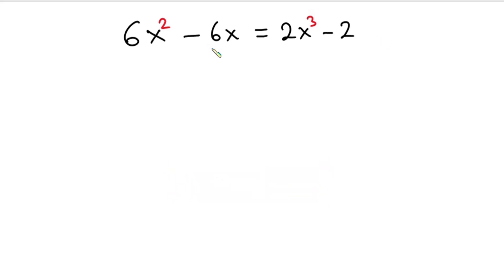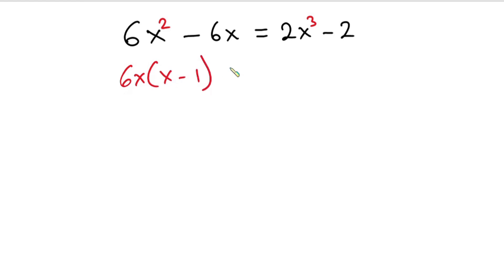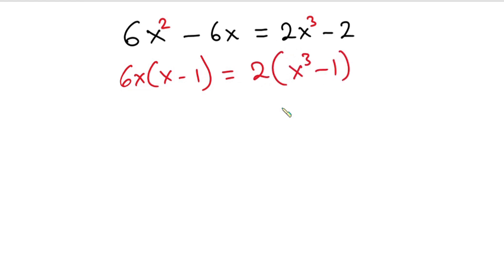Considering the left-hand side of this equation, we can factor 6x out. So we have 6x into x minus 1. And this is equal to... now from the right-hand side, we can take 2 common. So we have 2 into x to the third power minus 1.